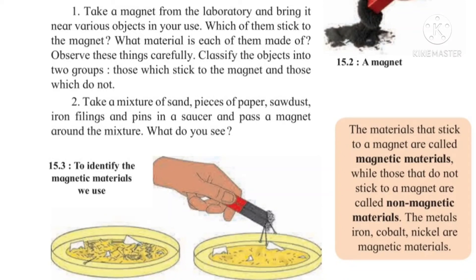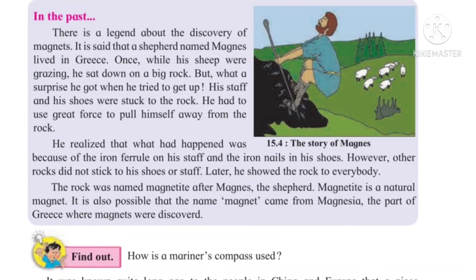Iron, cobalt, and nickel are magnetic materials. So now everyone has understood what a magnet is, and what magnetic and non-magnetic materials are. Now we have to see what happened in the past — how was the magnet discovered? There is a story behind that — the story of the magnet. For better understanding, let's watch a clip.